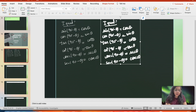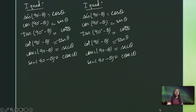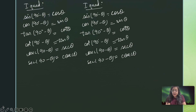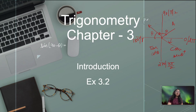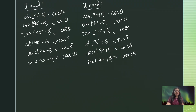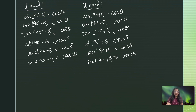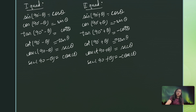Now let's work on the second quadrant. For the second quadrant, I simply move the minus into plus. In the second quadrant, only sin and cosecant are going to be positive — all the rest (cos, tan, cot, sec) are going to be negative.